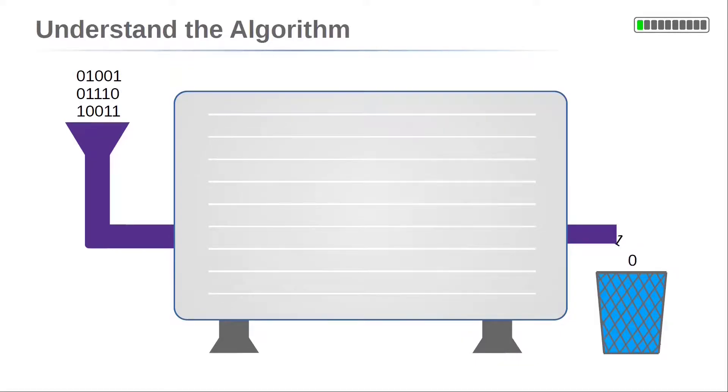It is often claimed that machine learning algorithms are like black boxes. They just take some data, somehow learn from it and give back results. But it is really difficult to understand how and why they produce the results.